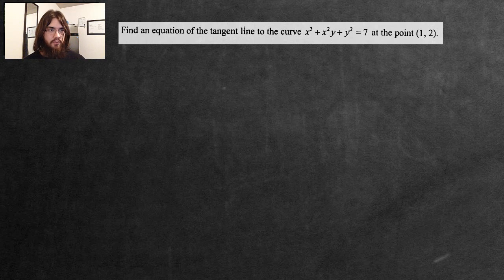Hello there, in this video we're going to be solving the following problem involving how to find a tangent line. Find an equation of the tangent line to the curve x³ + x²y + y² = 7 at the point (1, 2).